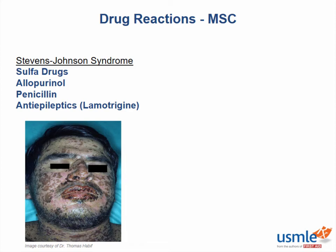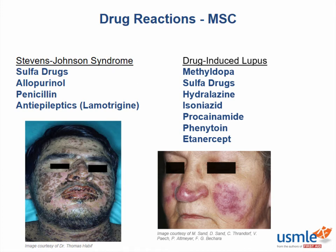These drugs can also trigger an autoimmune reaction leading to Stevens-Johnson syndrome. Similarly, this is how drug-induced lupus occurs. It is currently thought that the reactive breakdown products of these drugs directly bind to MHC proteins, which are then recognized as abnormal complexes by the immune system. The most common drugs to cause drug-induced lupus are hydralazine and procainamide.